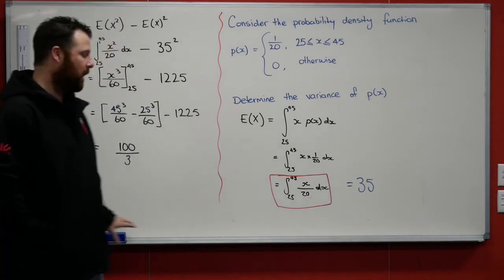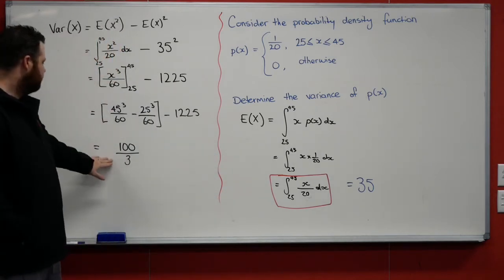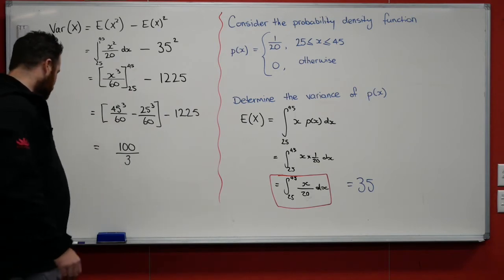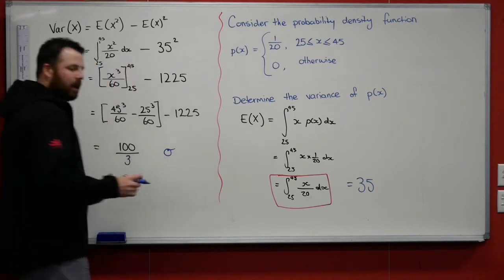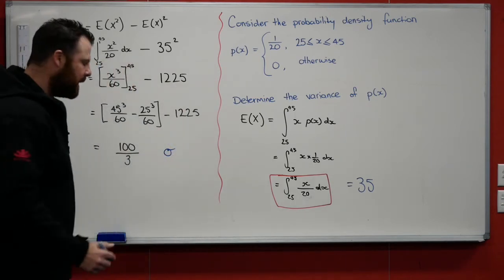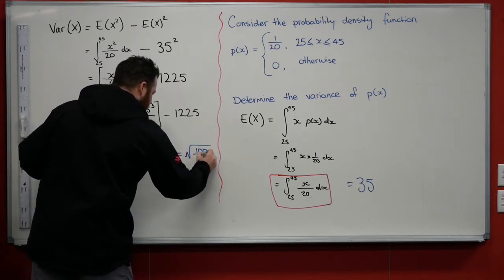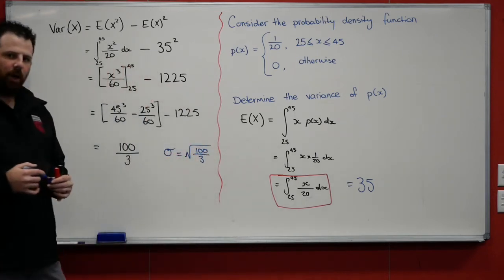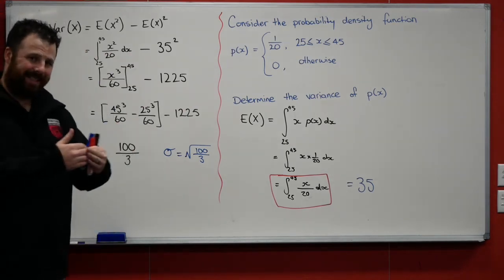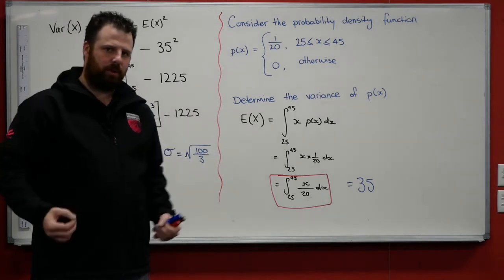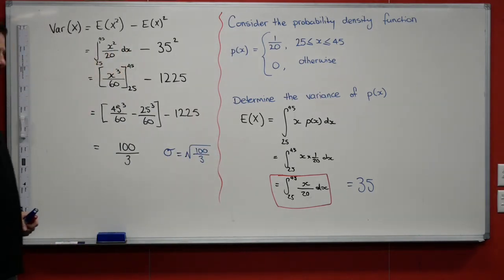Using the expected value of 35, we determine that the variance of x is going to be 100/3. The standard deviation, remember lowercase sigma represents standard deviation, is just going to be the square root of 100/3. And standard deviation is representing a distance. It's representing a spread of scores. So we only want the positive value of it. And that will be our standard deviation.